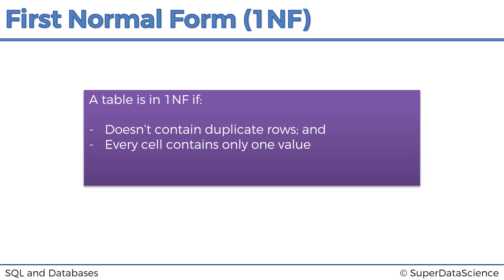So what is the first normal form? Well, let's look at the definition. A table is in first normal form if, first of all, it doesn't contain duplicate rows, and second, every cell contains only one value.